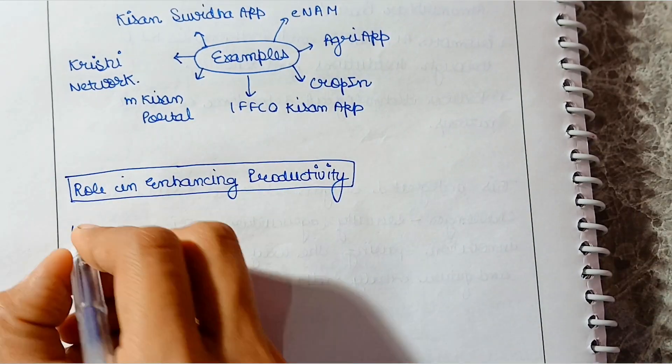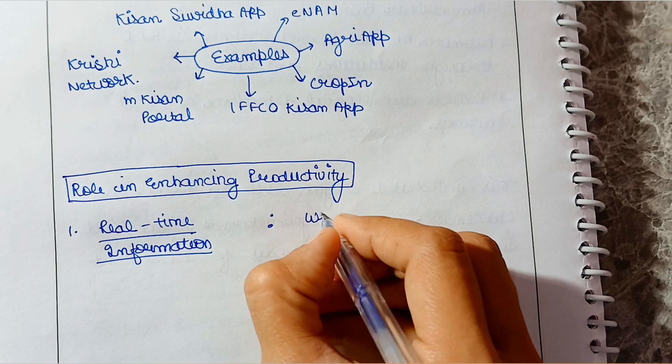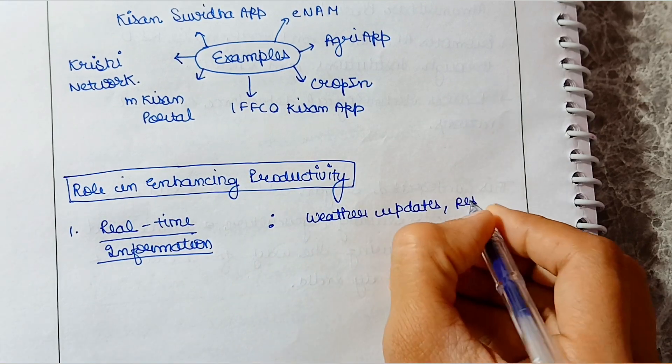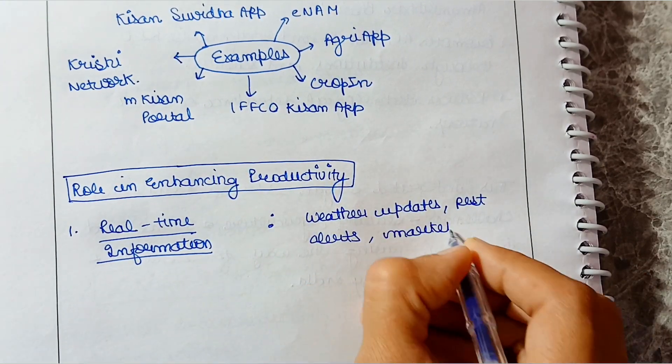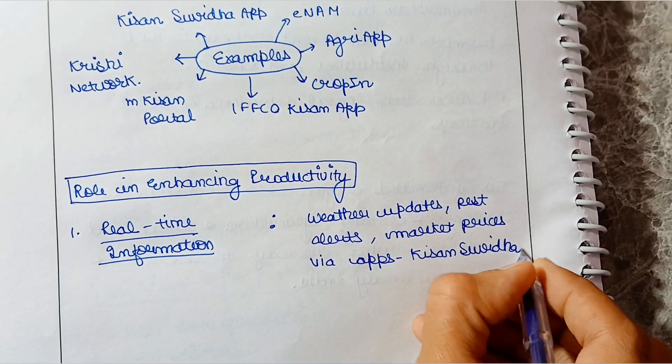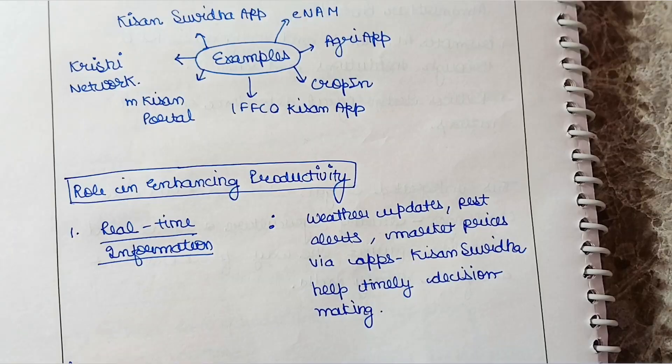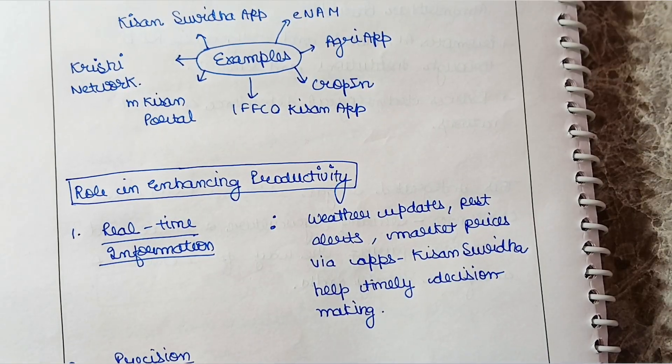Let's talk about real-time information: weather updates, pest alerts, market prices, via apps like Kisan Suvidha help timely decision making.